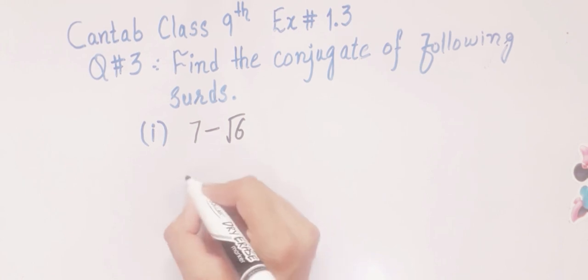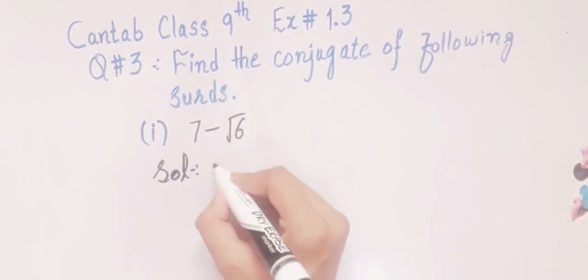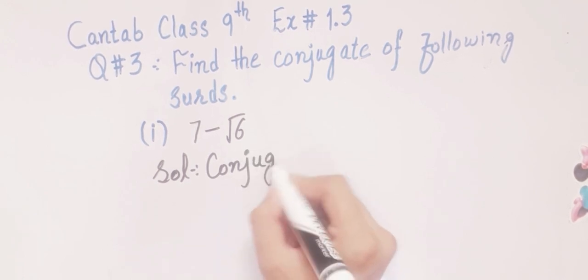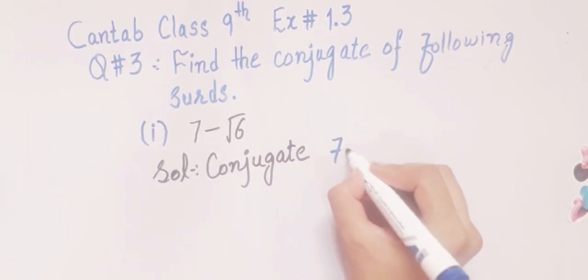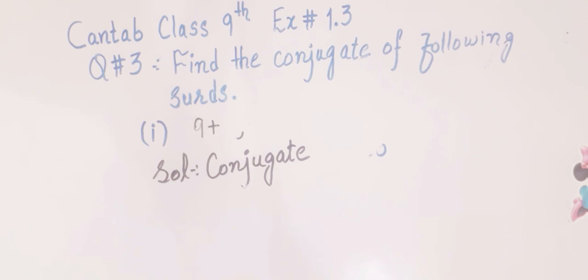We will solve this. Conjugate of 7 minus square root 6 will be 7 plus square root 6. I hope you easily understand this part. Now we will do the second part.